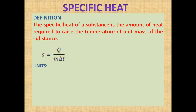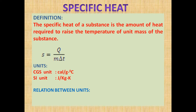Units of specific heat: CGS units — calorie per gram per degree centigrade. SI unit — joule per kilogram per Kelvin. Relation between units: 1 calorie per degree centigrade equals 1 kilocalorie per kilogram per Kelvin, which equals 4.2 × 10³ joules per kilogram per Kelvin.